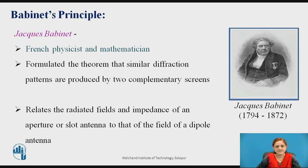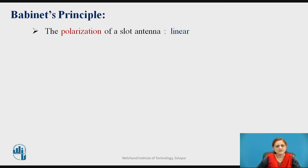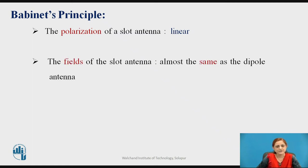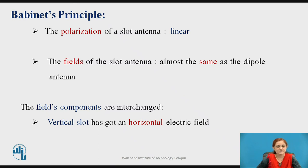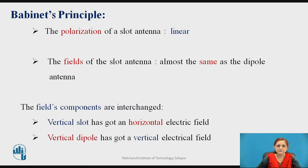Using Babinet's Principle, how the dipole and slot antenna relate to each other is discussed. The polarization of a slot antenna gives linear polarization. The fields of the slot antenna are almost the same as that of the dipole antenna, but the field components are interchanged. A vertical slot antenna gives a horizontal electric field, whereas a vertical dipole antenna has a vertical electric field component.